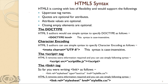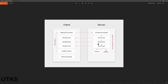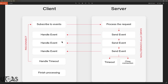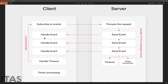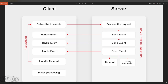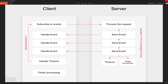Here is a diagram showing server-sent events. We have the client on one side and the server on the other. The client subscribes to the event; the server-sent event processes the request and sends the event to the client. The client handles the event, and when the handle times out, the server closes the connection and finishes. The client finishes processing the events sent by the server.